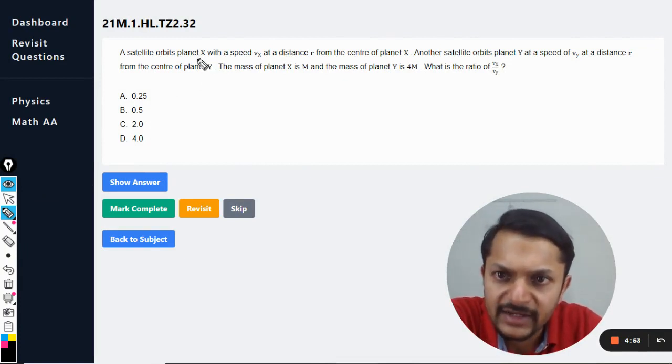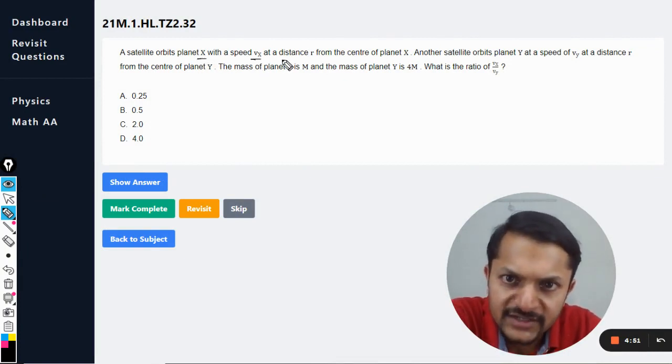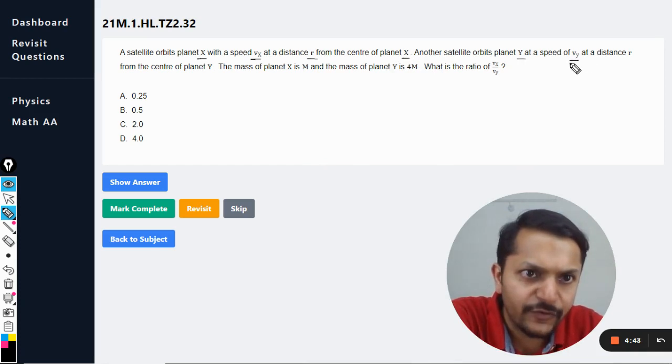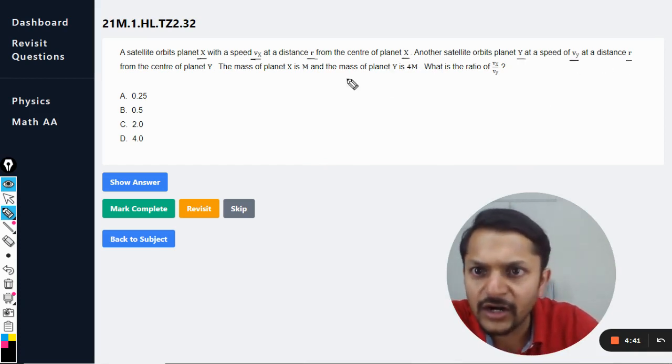A satellite orbits planet X with a speed of VX at a distance of R from the center of planet X. Another satellite orbits planet Y at a speed of VY at a distance R from the center of planet Y.